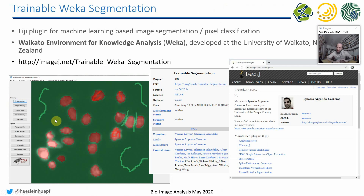When you look in Fiji and try to find machine learning algorithms, what jumps to your view immediately is the so-called Trainable WEKA Segmentation. WEKA stands for the Waikato Environment for Knowledge Analysis — it's a university in New Zealand. They developed this software library many years ago, and Ignacio led a project to develop a Fiji plugin. For about four or five years we've had it available in Fiji.